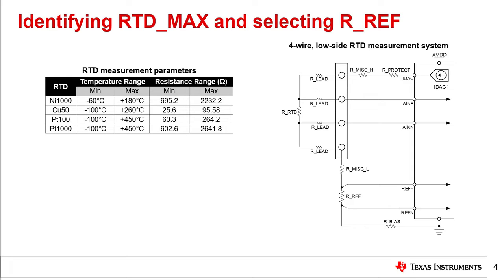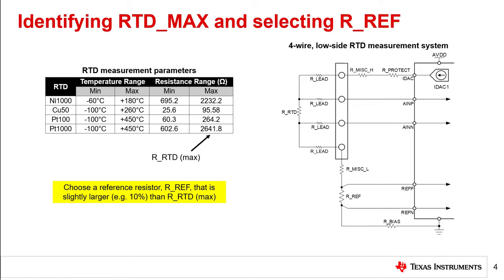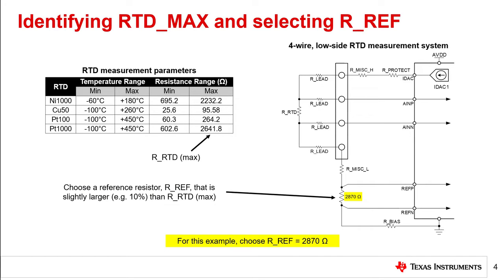Next, we need to select the maximum RTD resistance to be measured, as well as RF. Some example RTD measurement parameters are given in the table on the left, and on the right is a simplified version of the system we are trying to design. The table reveals that the maximum RTD resistance that needs to be measured is 2641.8 ohms, which is the equivalent resistance of a PT1000 RTD at 450 degrees Celsius. We will choose RF to be 2870 ohms, a standard resistance value approximately 8.5% larger than RRTD Max. Since RF needs to be high accuracy and low drift, selecting a standard resistance value makes this component easier to find and more cost effective.